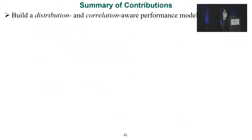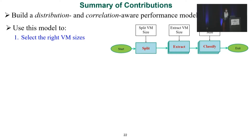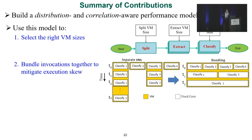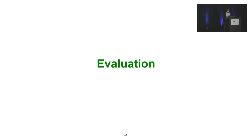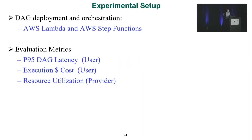The summary of our contributions: we build a distribution and correlation-aware performance model, use this model to select the right VM size for each function in the DAG, bundle invocations together to mitigate execution skew, and select the right delay value to pre-warm VMs without adding idle time. For evaluation, we use AWS Lambda with AWS Step Functions to orchestrate functions in the DAG. We focus on three metrics: P95 DAG latency, execution cost in dollars — important for the user — and resource utilization, which is important for the provider.